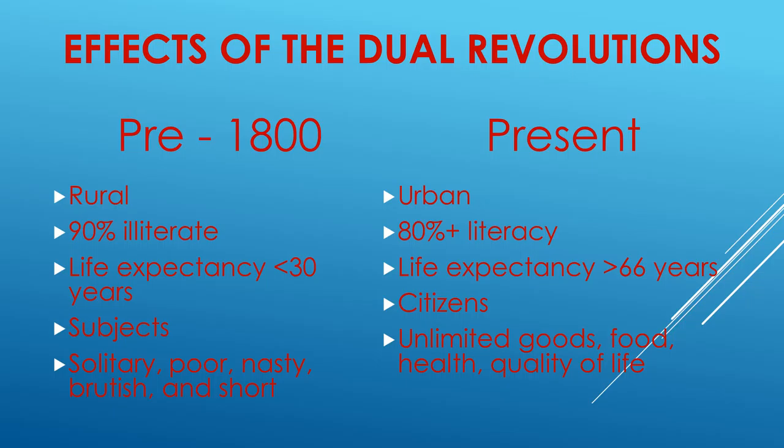Regarding literacy, 250 years ago, 90% of the population was illiterate. Today, over 80% of the people in the West are literate. Life expectancy used to be less than 30. Now it's 66, and in many countries it's substantially higher. And not only did the average person not live very long, most enjoyed no rights as we think of rights today. They were subjects of a king or a count or an aristocrat. And for many centuries, the Catholic Church had its own courts and had jurisdiction over civil affairs. They were not, in any sense of the word, citizens as we are today.